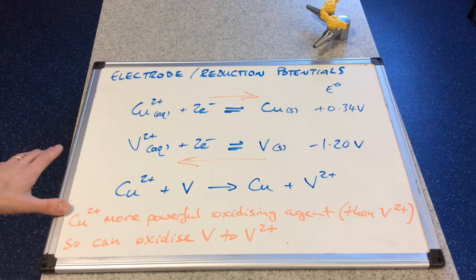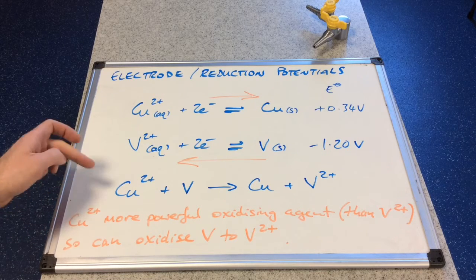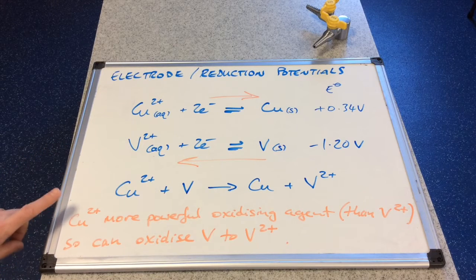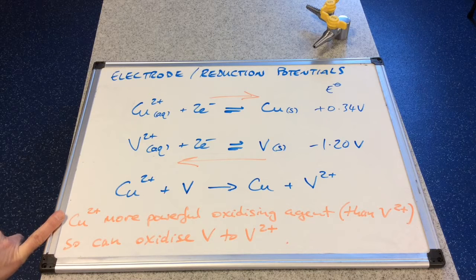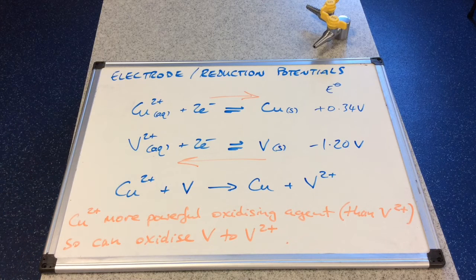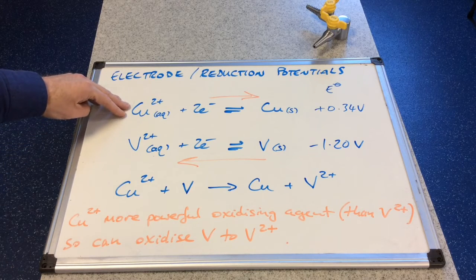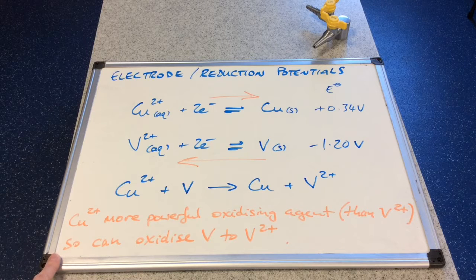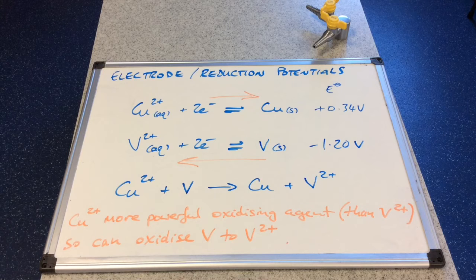So you can see I've written at the bottom there a kind of answer you would give. The reason this reaction takes place, this reaction and not the other way around, is because copper two plus ions are more powerful oxidizing agents than V two plus ions. How do we know that? Because of the more positive standard electrode potential for this half cell. So they can oxidize V to V two plus.